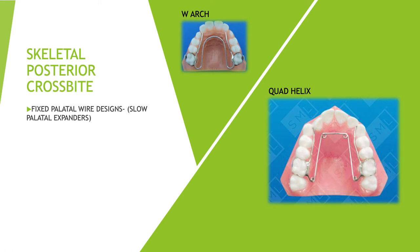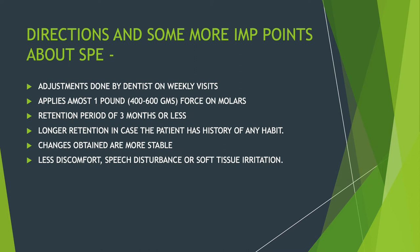These are called slow palatal expanders. Adjustments are done by the dentist either weekly or bi-weekly depending on the patient's progress. The force applied through slow expanders is less — almost 400 to 600 grams on the molars and around 200 to 300 grams near the canines, roughly one pound. The retention period needed to maintain the results is also less — about three months — because the changes are slow, gradual, and stable.